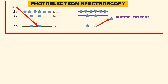Let us bombard this atom with a beam of high energy electrons. What happens is one of the core electrons is ejected. The ejected electrons are called photoelectrons. Photoelectron spectroscopy is based on this phenomenon — it is the study of the kinetic energy of photoelectrons emitted.